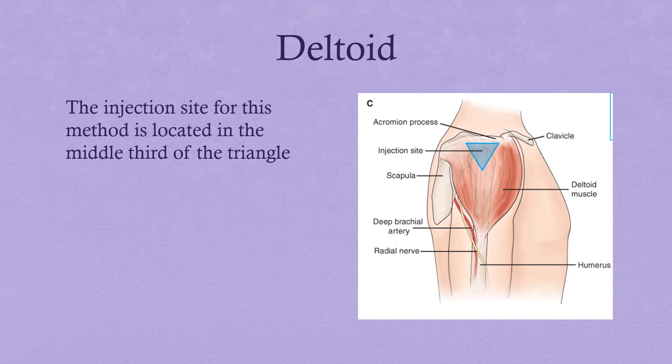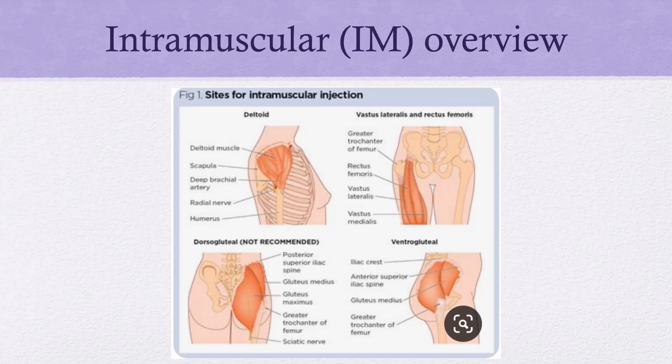The deltoid is a small muscle mass and can only handle up to 2 mLs. You'll typically use a 1 to 1½ inch needle, and we don't typically use this site in infants or toddlers younger than 3. To recap: deltoid, no more than 1 mL; vastus lateralis, used in infants up to one year of age; ventrogluteal is the preferred site and can handle the most volume of medication. Site selection depends on the age, the medication type, and the volume to be administered.